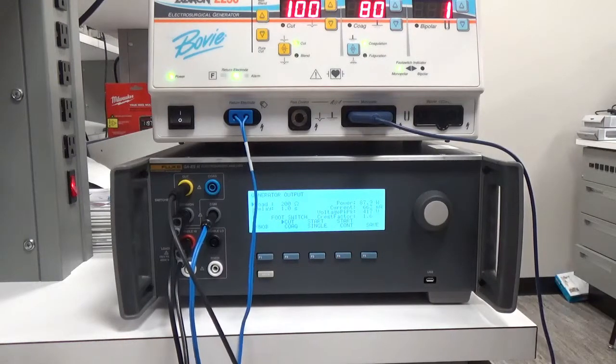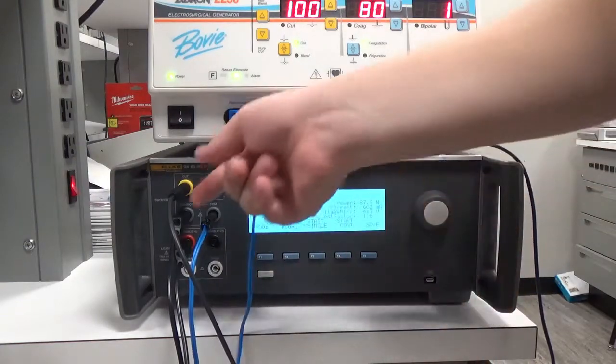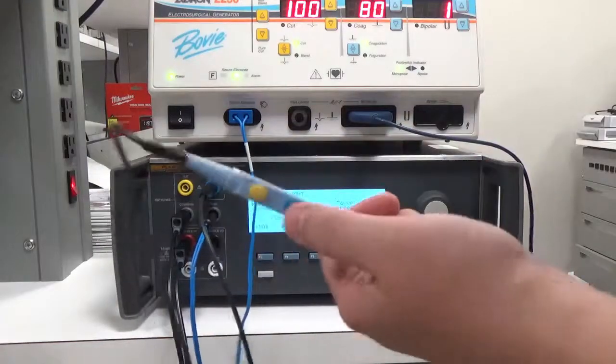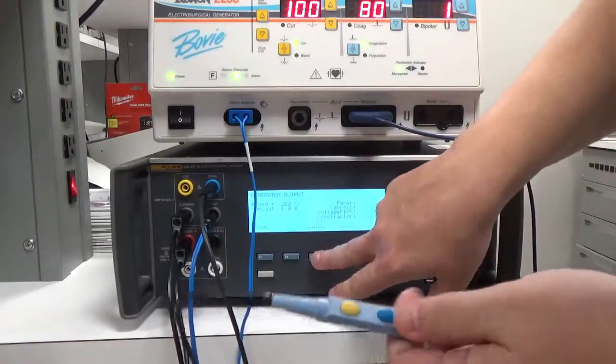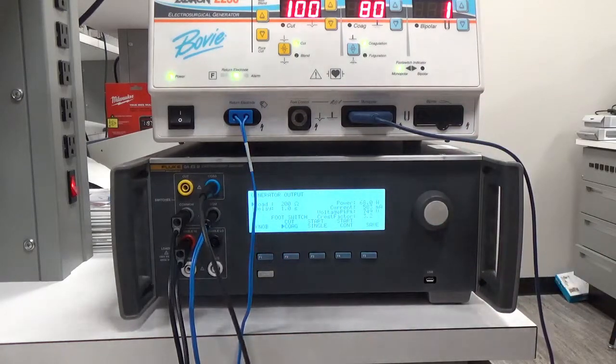87.9 watts, 663 milliamps, etc. If I wanted to do coag, I would just change the coag here. I would change my port to the coag port and I'd be hitting the coag button. And there's our information displayed there.